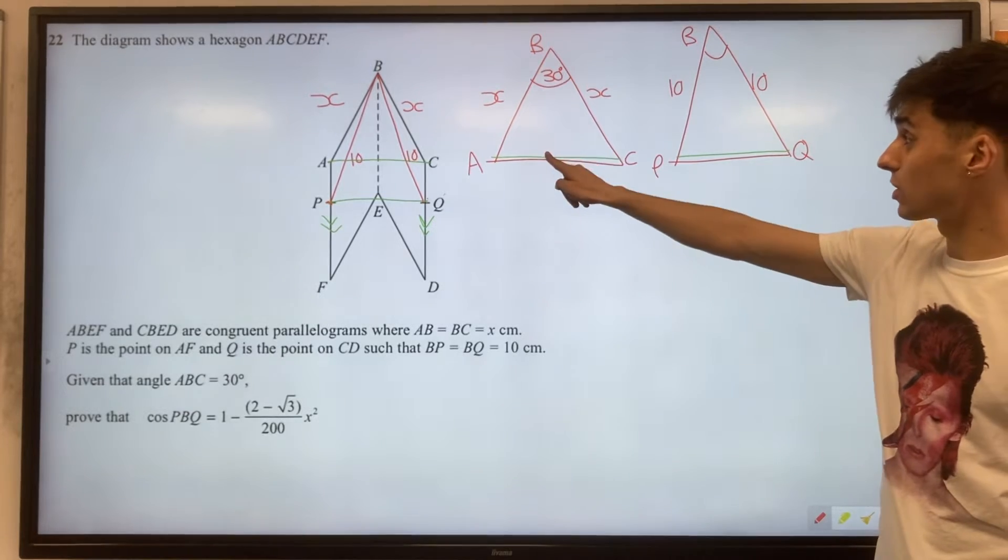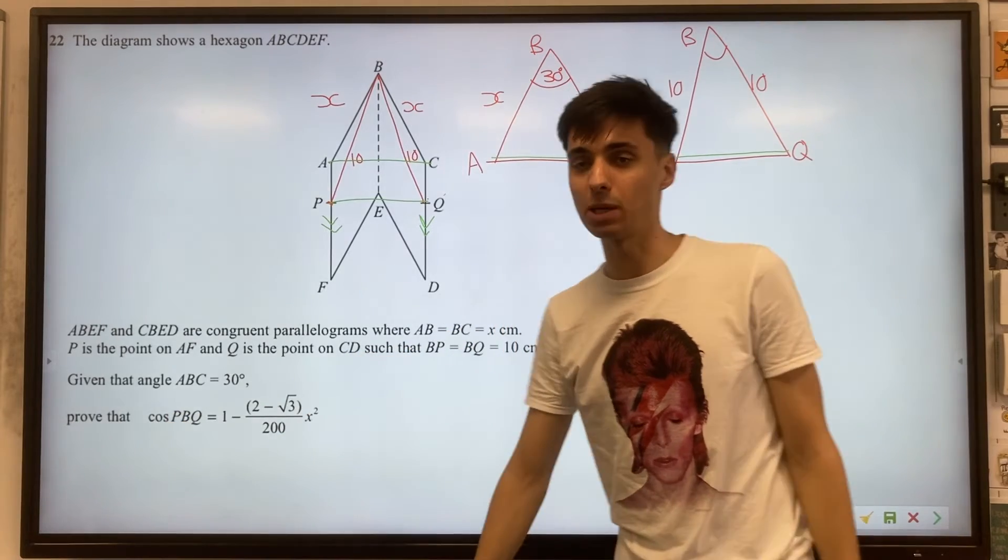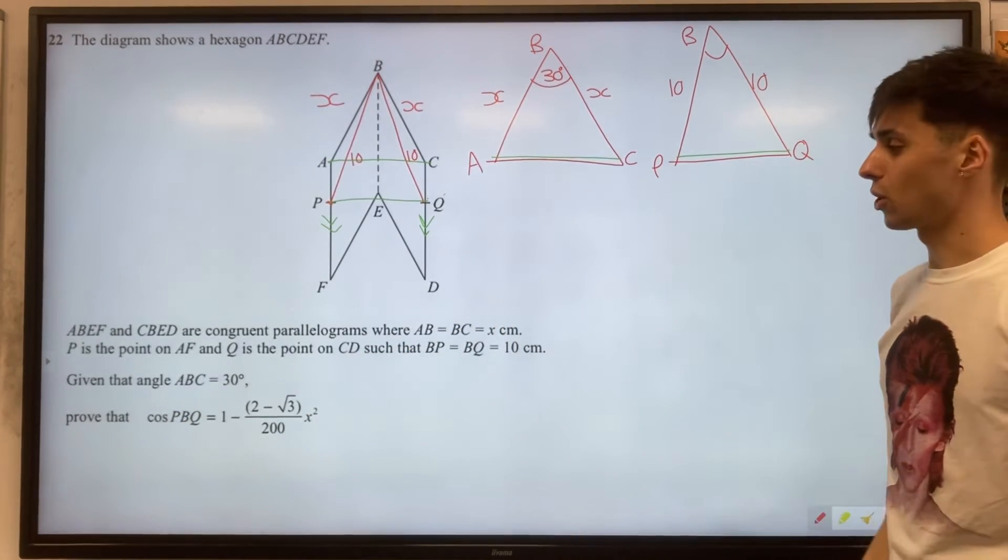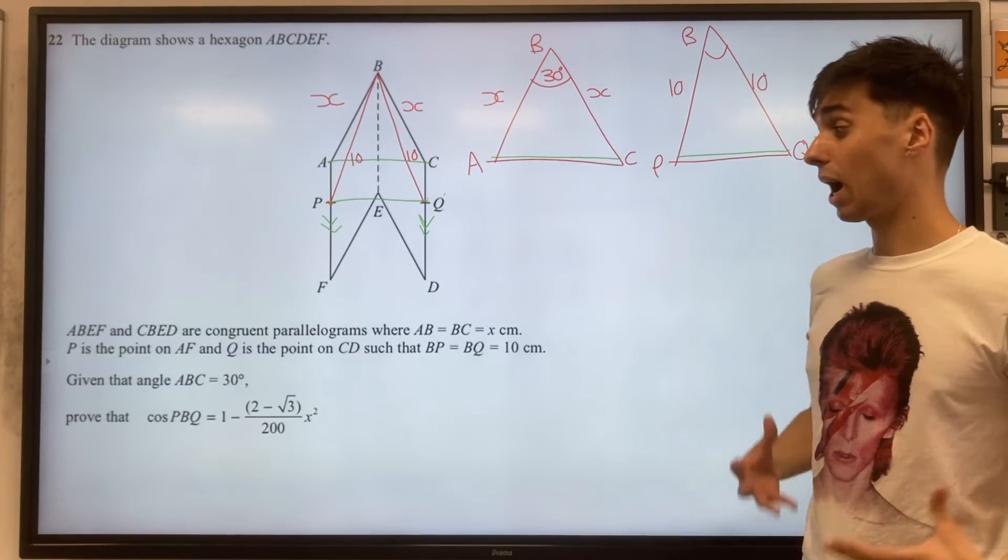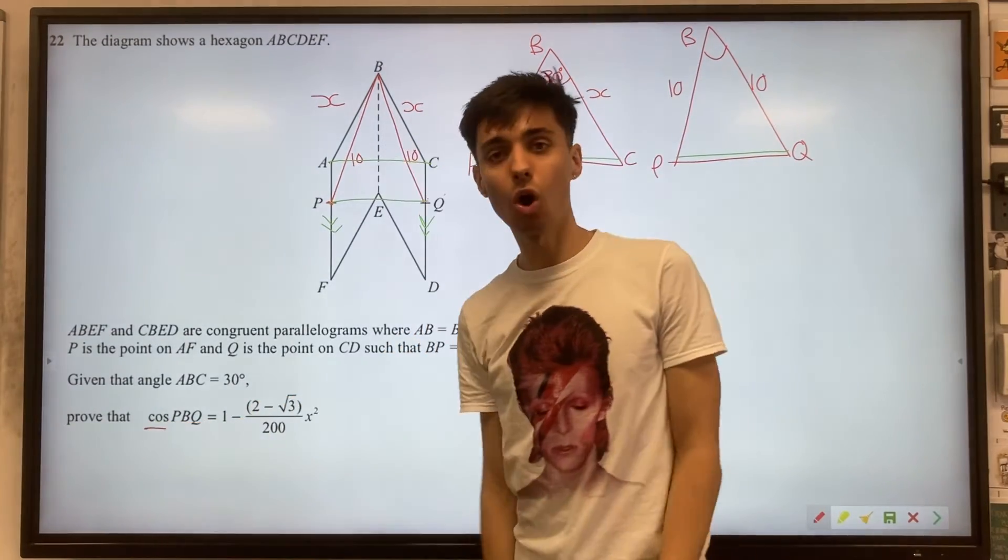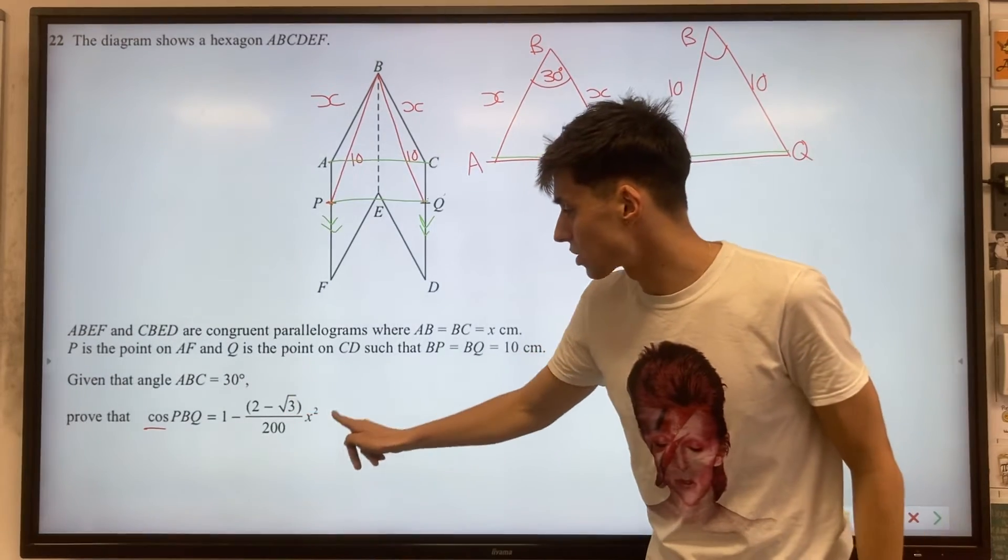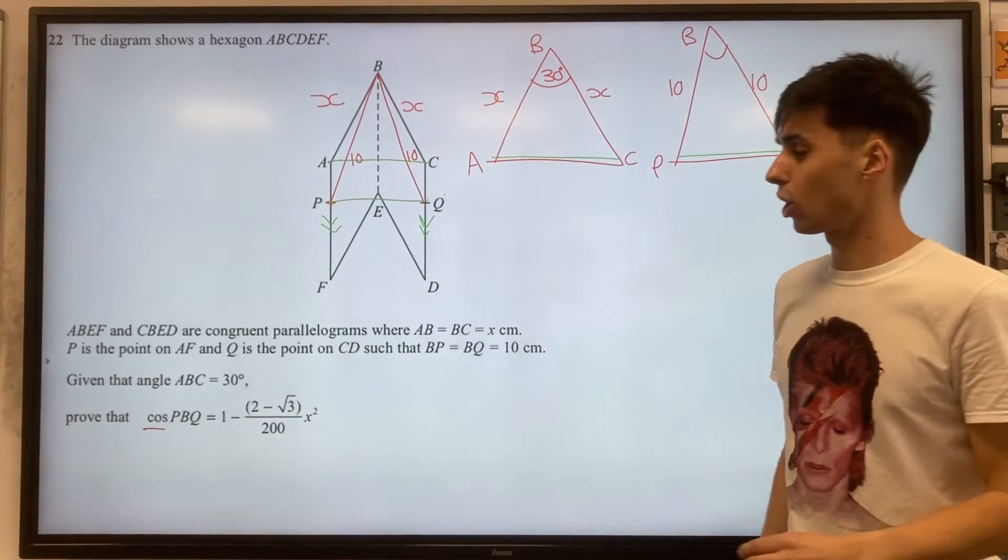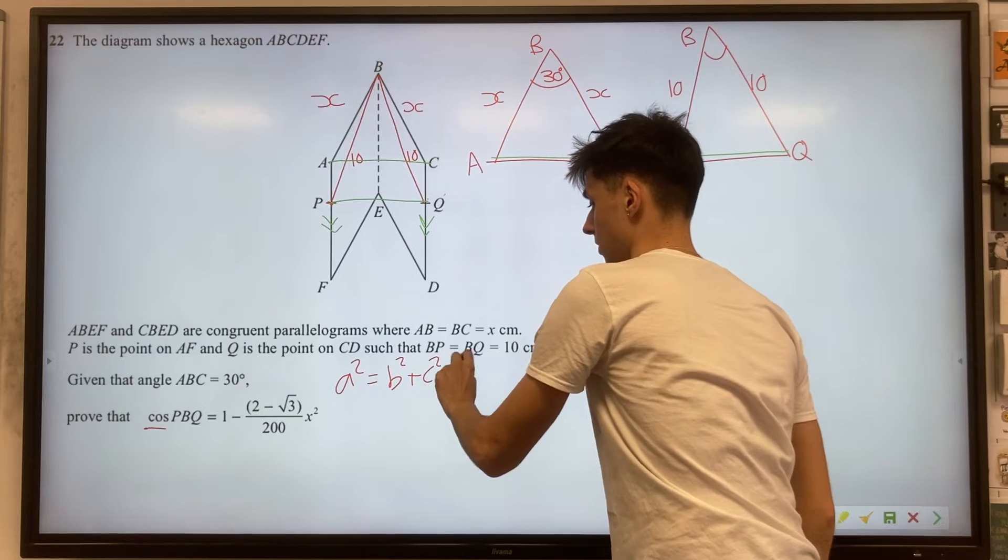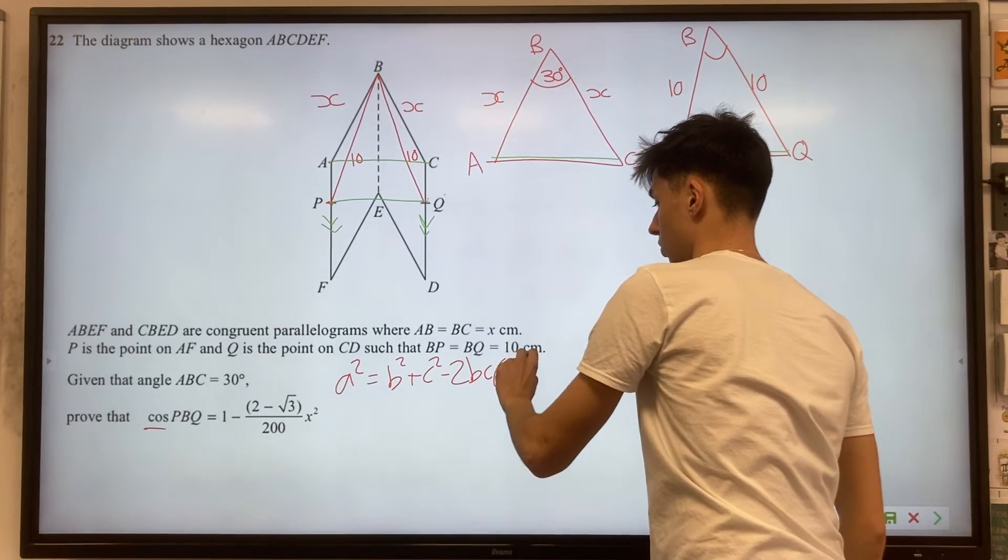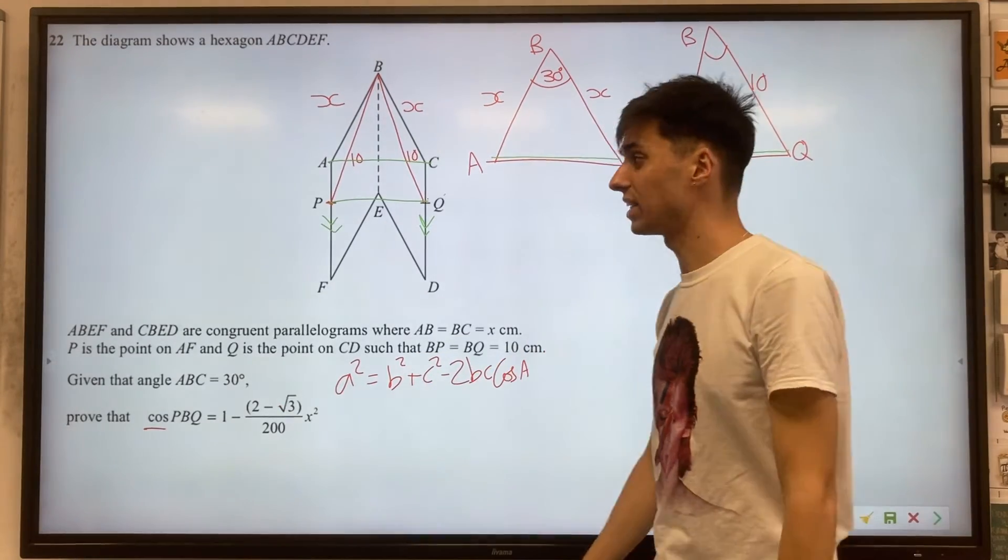So what we're going to do is leverage this idea to compare the two triangles and eventually find cos PBQ. Before we get there, though, the real idea that we're going to have to use is cosine rule. And the key for that, how we know we're going to use it, is the answer is asking for cos PBQ. So that's a bit of a giveaway. And also it's got this X squared in here. So if you think about cosine rule, we've got A squared equals B squared plus C squared minus 2BC cos A. There's a lot of squares in there. That's a bit of a hint that we might need to use cosine rule.